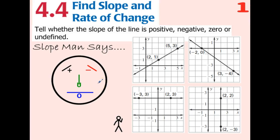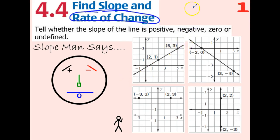Good morning. Today we are switching gears a little bit from making a table and plotting points to finding what's called slope. Another word for slope is rate of change. So what is slope? Slope is how angled our line is. We've been making a table to plot some points to create a line. Now we want to know: is it a positive slope, a negative slope, is it zero, or is it undefined?